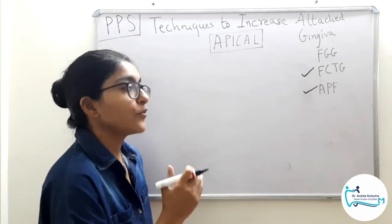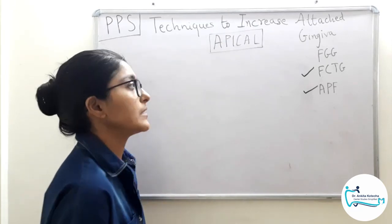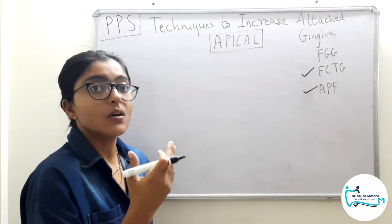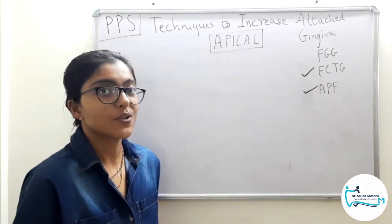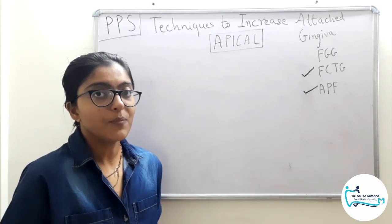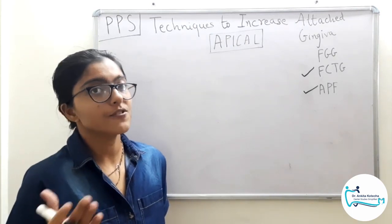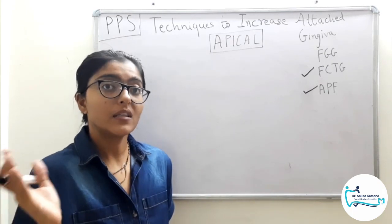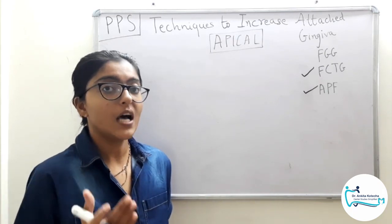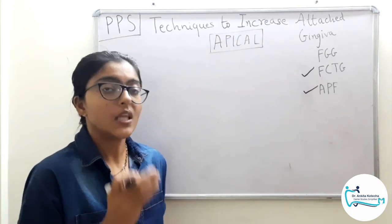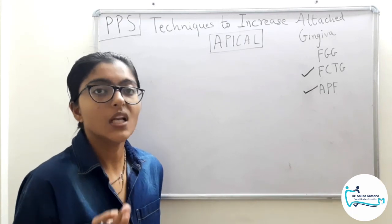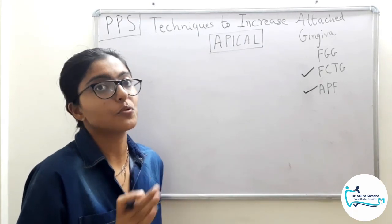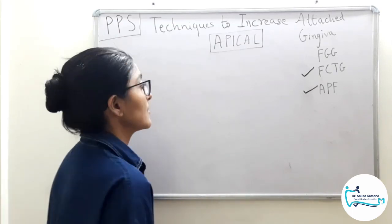Now we will discuss how to perform free connective tissue graft. The steps are the same as free gingival graft — recipient bed preparation, procuring the graft, transferring the graft, suturing it, and managing the palatal wound — but the execution is totally different, so please pay attention.